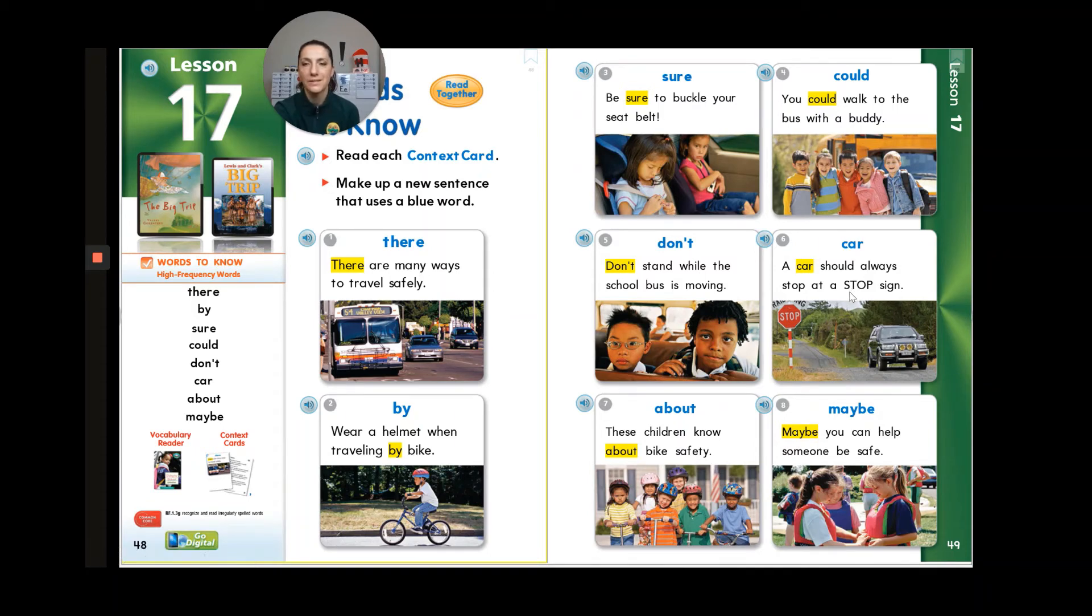Number six, car. A car should always stop at a stop sign. Number seven, about. These children know about bike safety. And number eight is maybe. Maybe you can help someone be safe. And that is one word. It is from may and be, but we just put them together. Maybe.